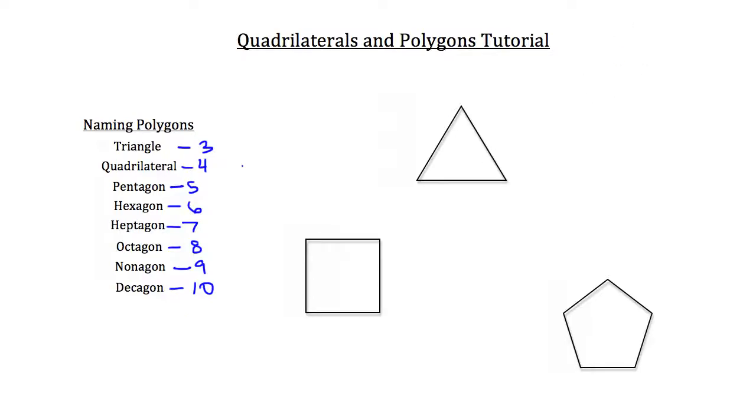So go ahead and name these three figures off on the right-hand side. Well we know that this is a triangle and this is a quadrilateral and this last figure is a pentagon. Octagons you see all the time, those are stop signs. The rest of the figures are a little bit less common in our everyday life but you're going to see some in the rest of the videos that follow.